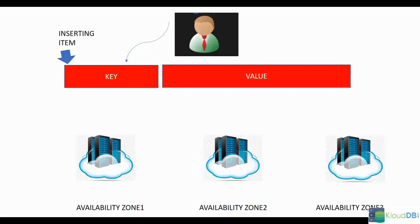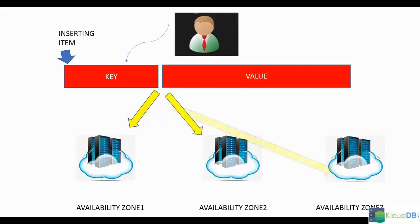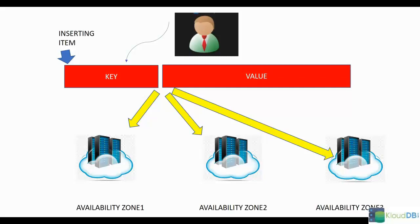The data gets consistent across three availability zones. Why store in three availability zones? DynamoDB has a built-in high availability feature, which means the data is stored in three different data centers, or three different availability zones. So if something happens to one availability zone, the data is still available in the other two.